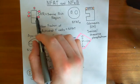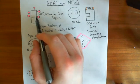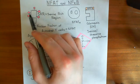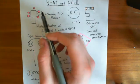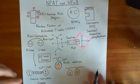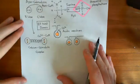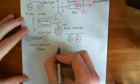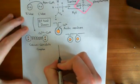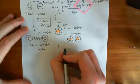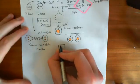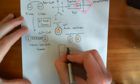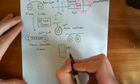Calcineurin is going to break off the phosphate groups from the serine residues of the serine-rich region of the nuclear factor of activated T-cells. So the nuclear factor is going to have the phosphate groups cleaved off it — it's now gone bare. Here is the serine-rich region, now with no phosphate groups on it.